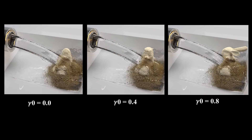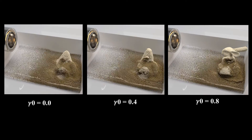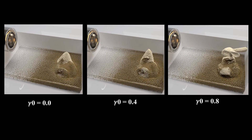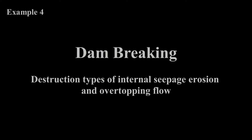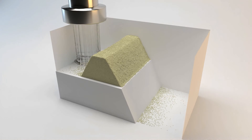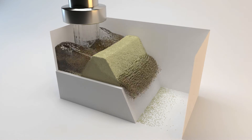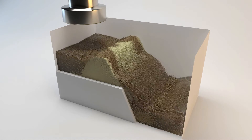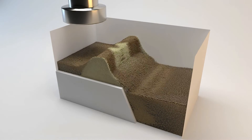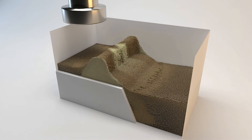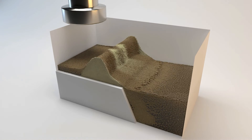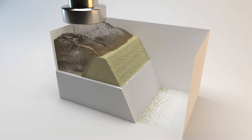Example 3 shows three different types of bunny soil structures destructed by pouring water. Example 4 demonstrates different types of dam-breaking simulations. This video shows the soil structure steadily eroded by water internally, and another example reproduces an overtopping flow disaster.